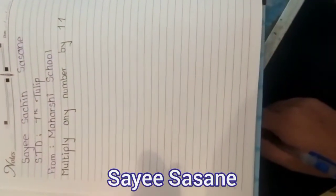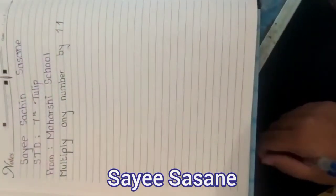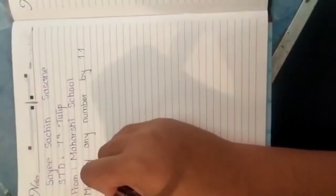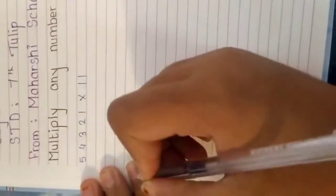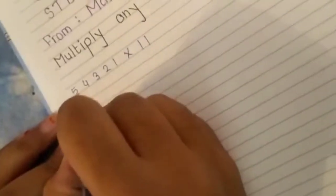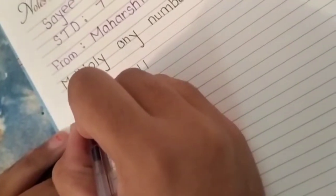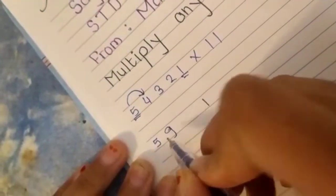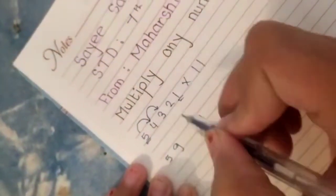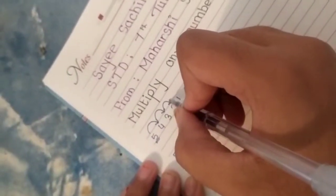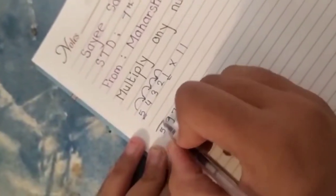Hello everyone, today I am going to show you a trick of multiplying any number by 11. So, I have taken here number 5, 4, 3, 2, 1 into 11. And for the first step, take the first number which is 5 and take the last number which is 1. Now, add 5 to 4, it comes 9. 4 plus 3 comes 7. 3 plus 2 comes 5. And 2 plus 1 comes 3. And your answer is ready.